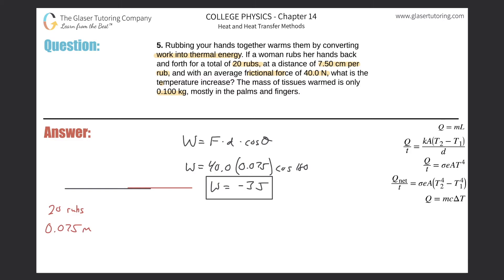If we have 20 rubs in total and each rub releases three joules of energy, that means the overall work done would have simply been negative 60 joules.